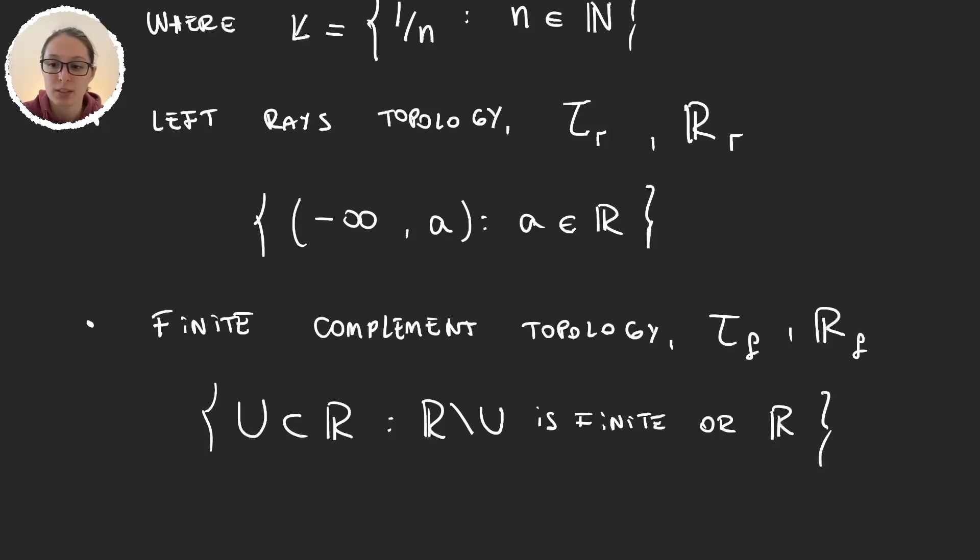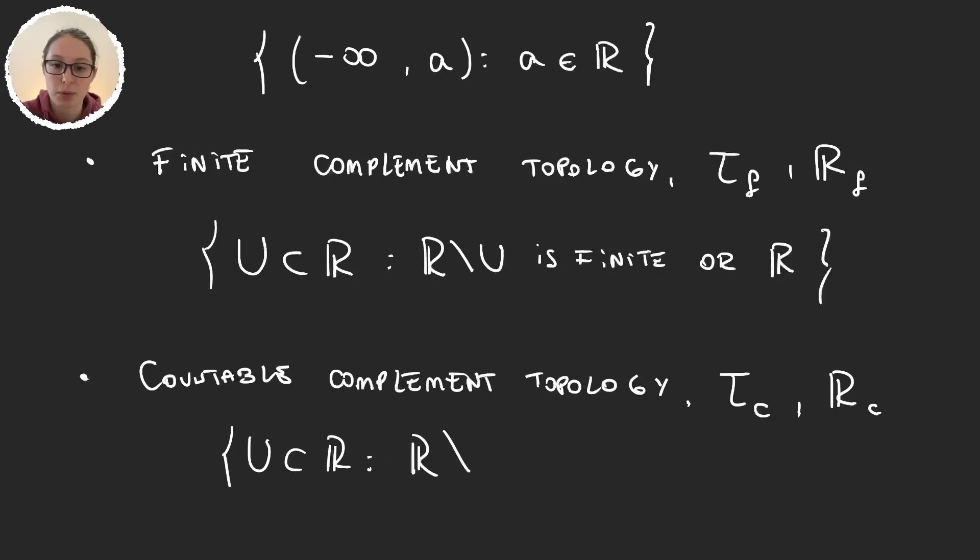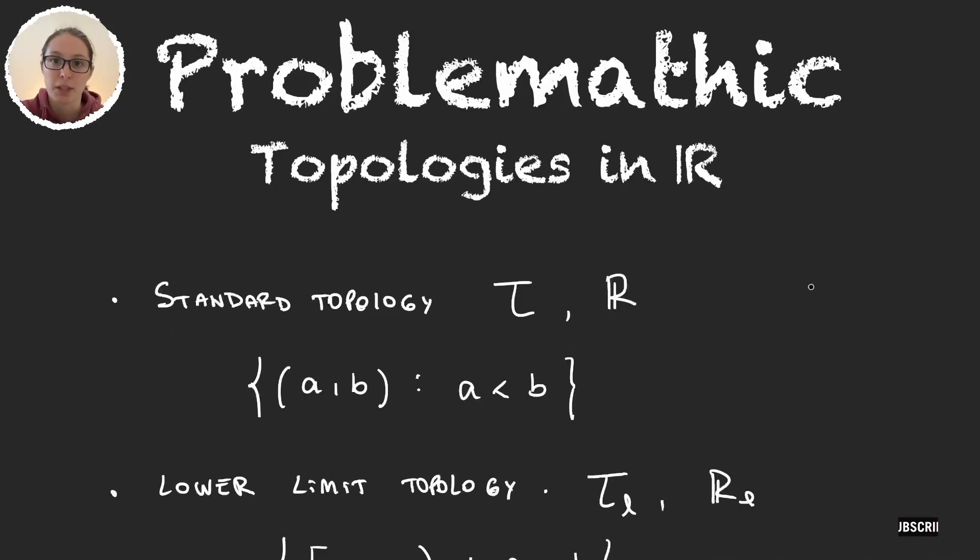And finally, the countable complement topology. We worked with this in our previous videos solving one of the exercises in Munkres's book. Denoted by τ_c and ℝ_c, and it's generated by the subsets of the real line such that ℝ minus U is countable or the real numbers. So these are all the topologies we are going to work with in the videos that follow.